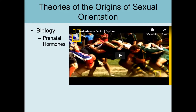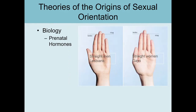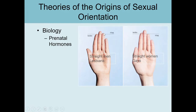Before we talk about which brain structures govern sexual orientation, I want to discuss something brought up in the video: the 2D:4D ratio. To measure your own ratio, use a ruler starting at the base where your pointer finger joins the palm — there's a crease there. Measure from that crease to the tip of your index finger, not counting the fingernail. Then repeat that same process with the ring finger, from the crease where it joins the palm to the tip.